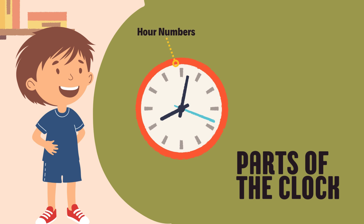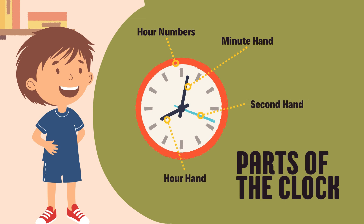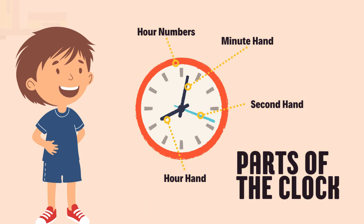One: there are one to twelve numbers in a clock that are called hour numbers. Two: the large hand in the middle is the minutes hand. Three: the small hand in the middle is the hours hand. Four: the thin hand in the middle is the seconds hand.